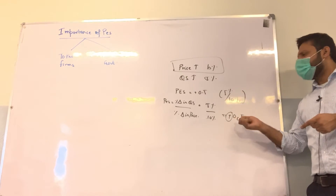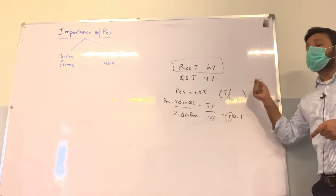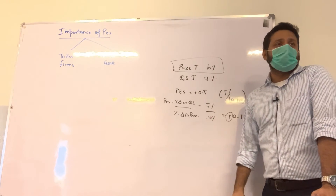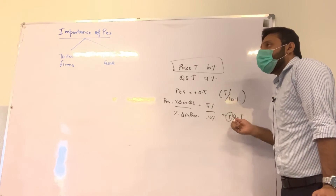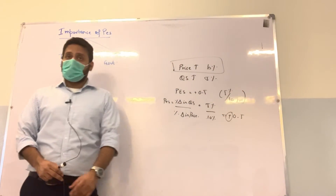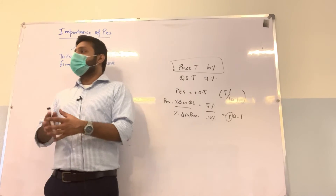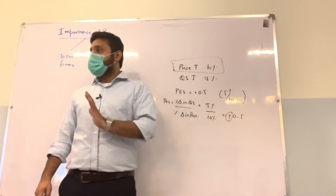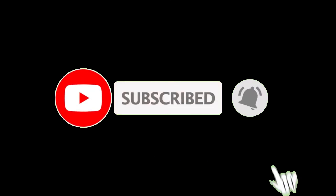If the producer knows that the supply is inelastic and will not be able to increase output, they should make necessary preparations from beforehand. The producer should try their level best to make the supply elastic from inelastic. If supply is inelastic, the response is low — so the producer should work to make the supply elastic.